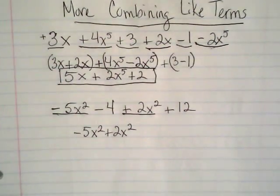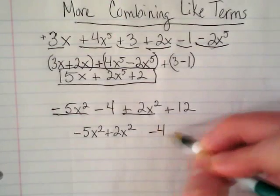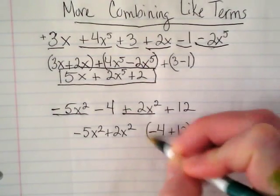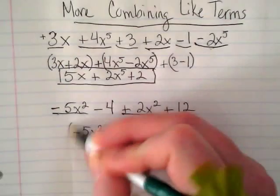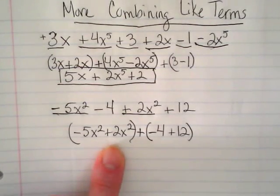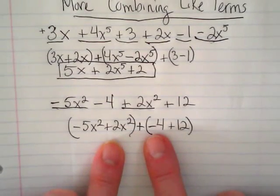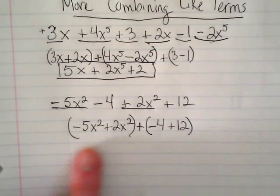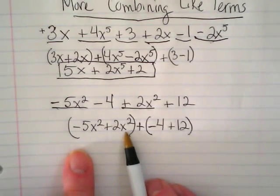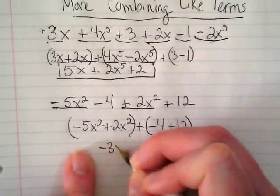What else goes together here? Negative 4 plus 12. I'm going to put these in parentheses and these in parentheses, and slip an 'and' sign in there — that was invisible before but I'm making it visible. I've got these kinds and these kinds. The first thing is a negative — we want to keep that negative with that 4. When I do negative 5 and positive 2, we get negative 3x squared.